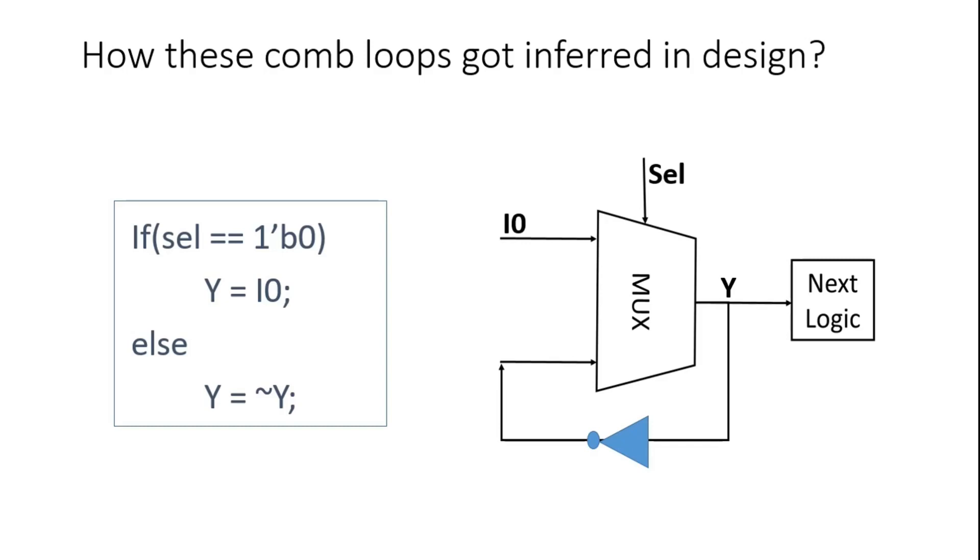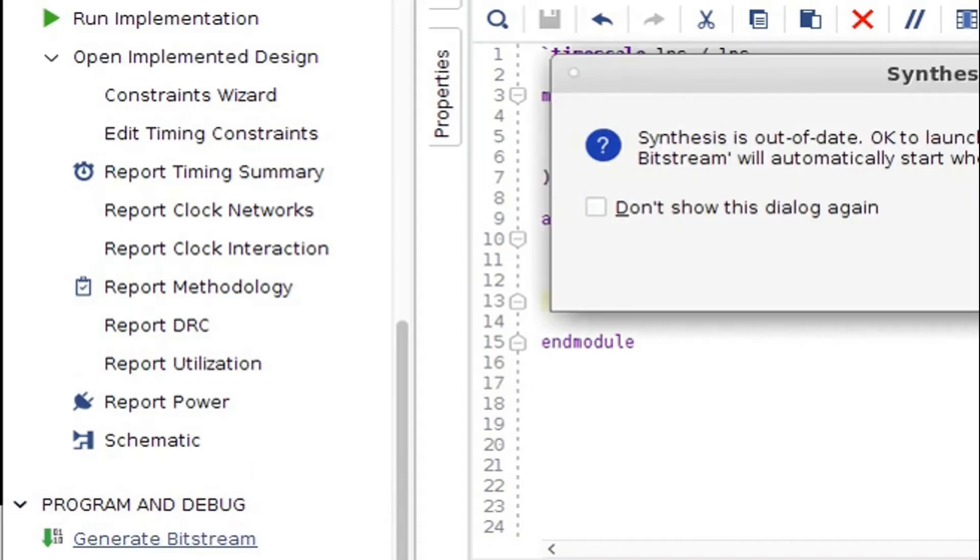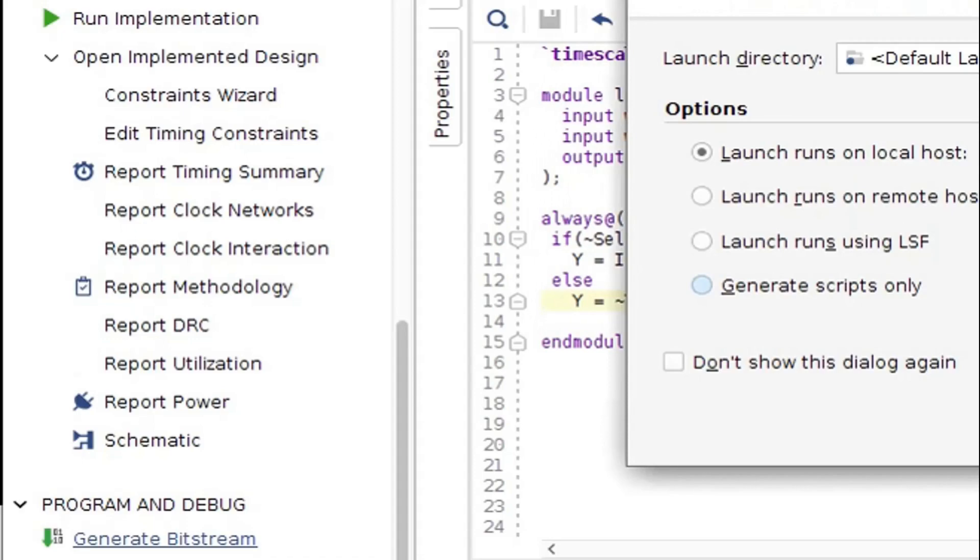Now I have changed our code and I have introduced an else statement where y is equal to NOT of y, so that our code should generate a combinational loop. And now I am going to generate the bitstream so that it should go through the synthesis and placement and routing stage.